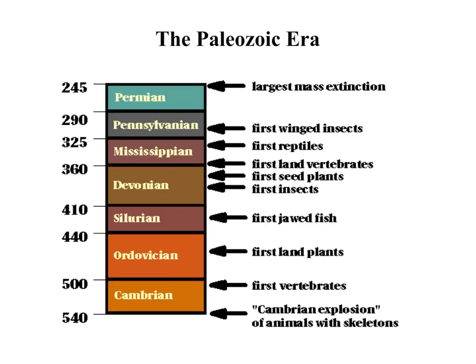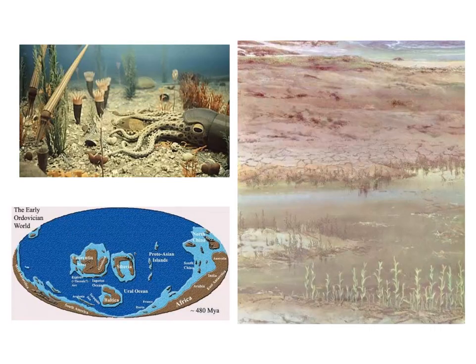Following the first land plant, the jawed fish would evolve and then the insects would evolve. Because everything had been happening in the oceans up to this time, the land was really desolate. The ocean was the happening place to be, but now it was time to move on to land.